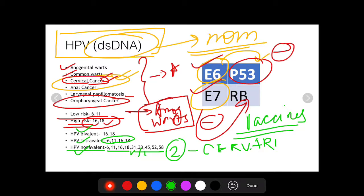These additional serotypes are 31, 33, 45, 52, and 58. These are the extra serotypes against which HPV nonavalent vaccine affords protection.